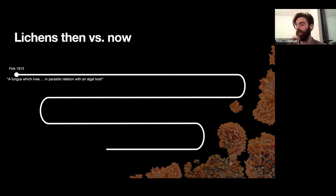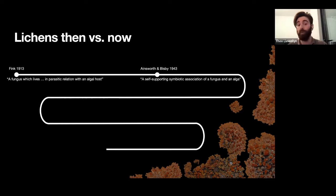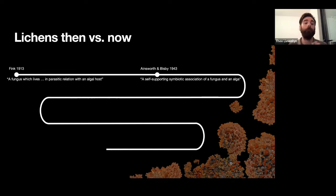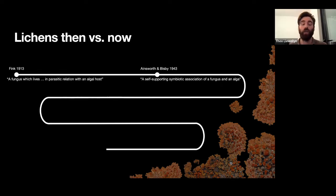About a hundred years ago, there was an idea that it was almost like a parasitic relationship — a fungus parasitizing an algae and using it as an energy source, with the algae being damaged. Through more study, it came to seem more like a mutualistic symbiosis. The key character is that it was self-supporting — the organism is able to complete its whole life cycle within this symbiosis.